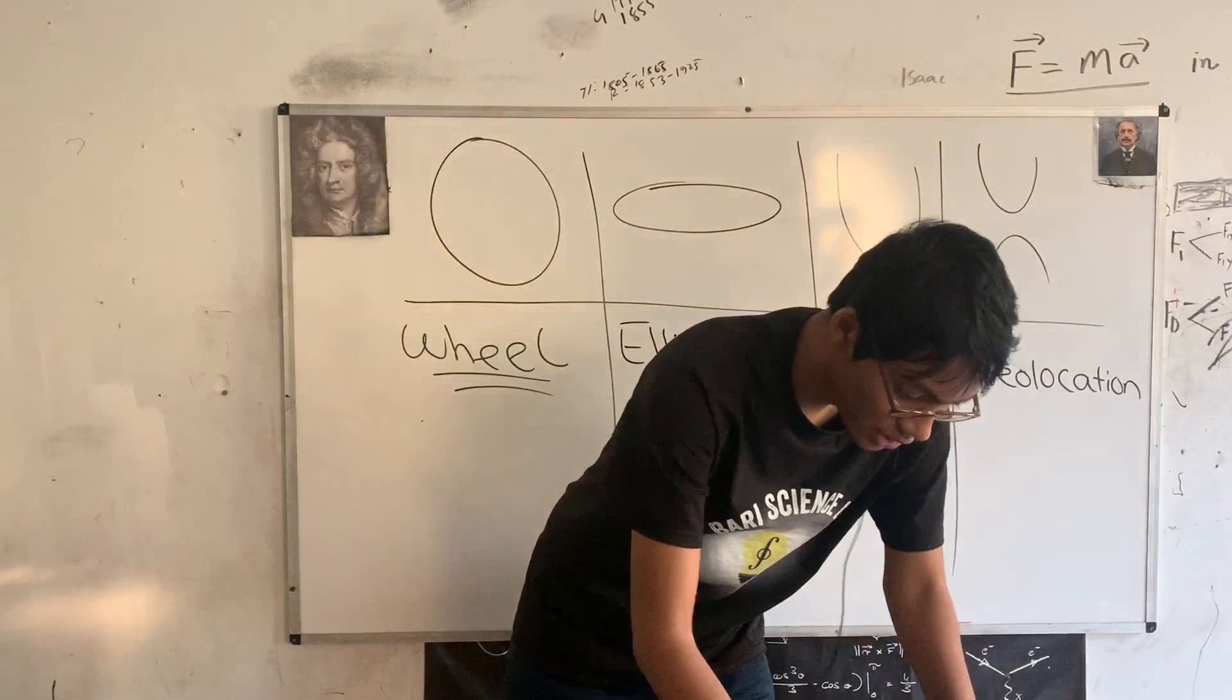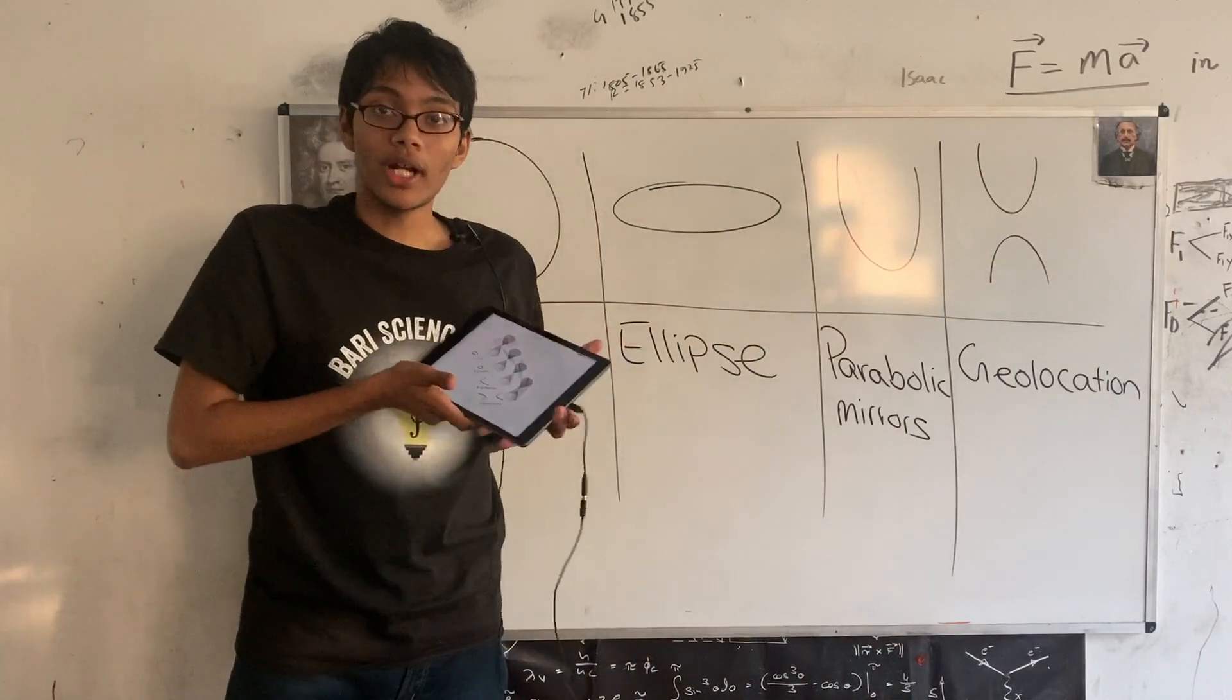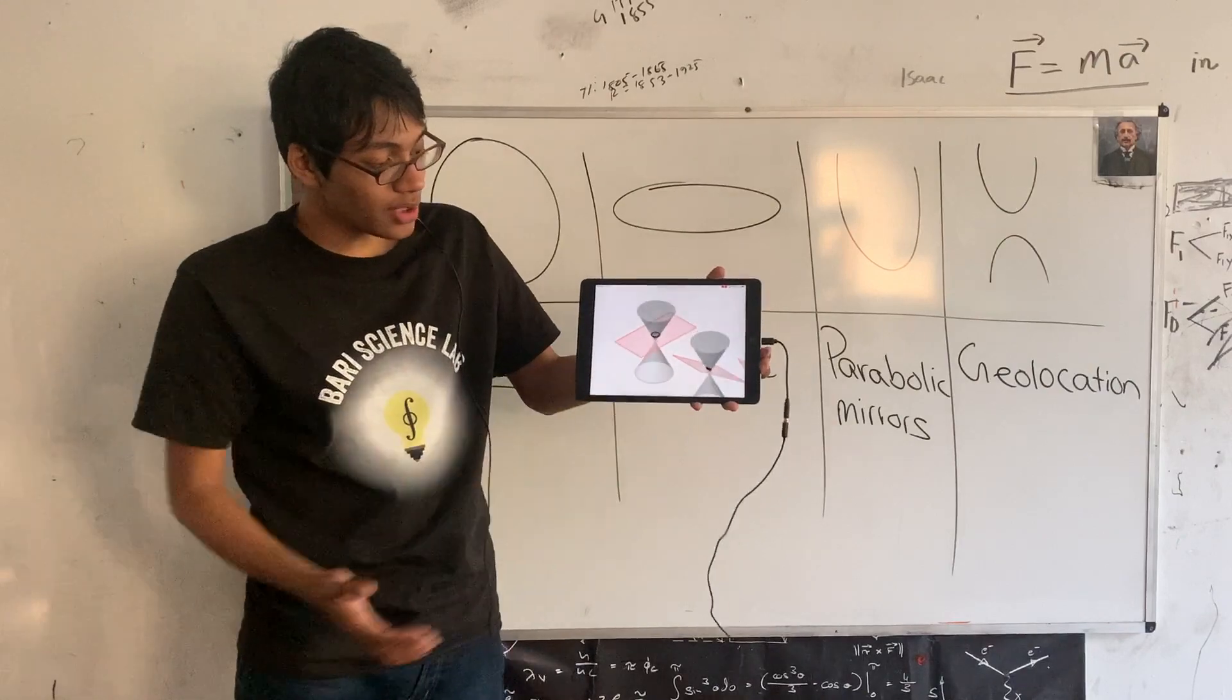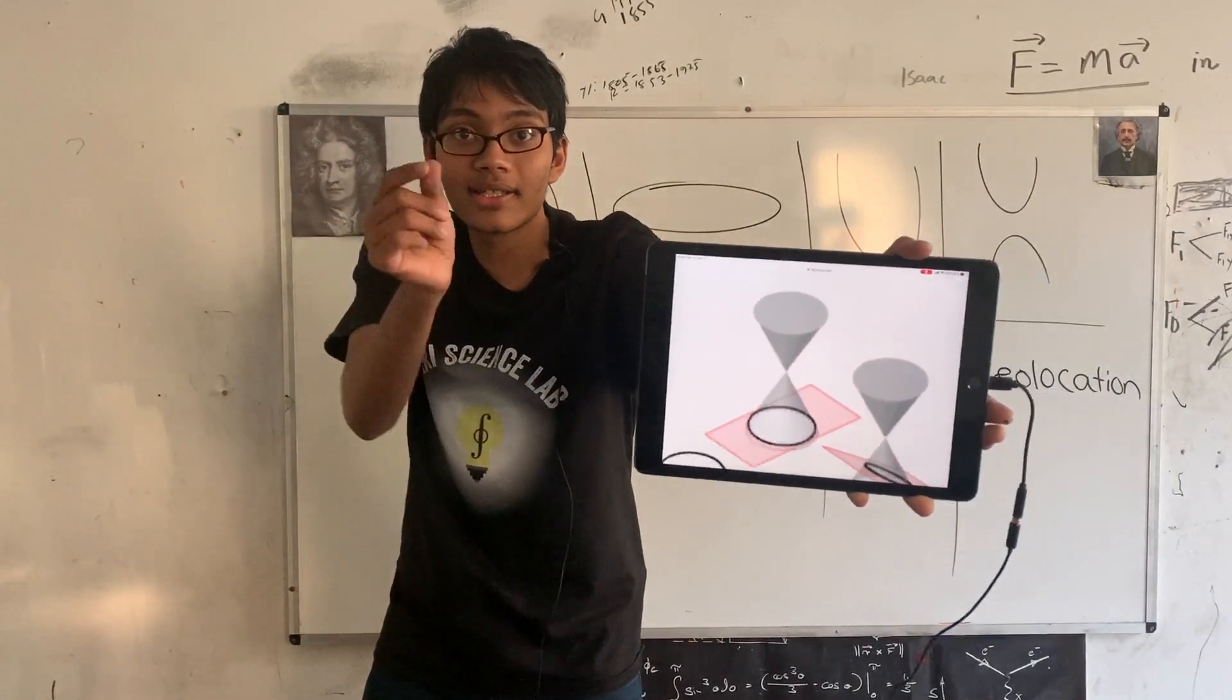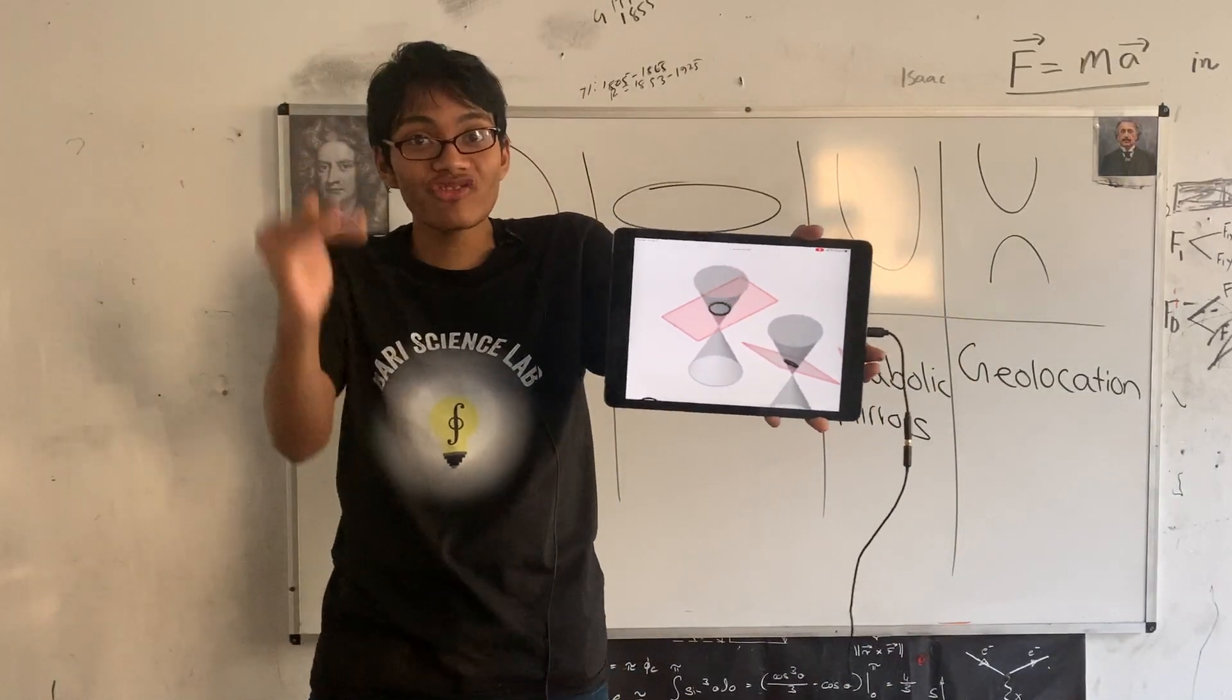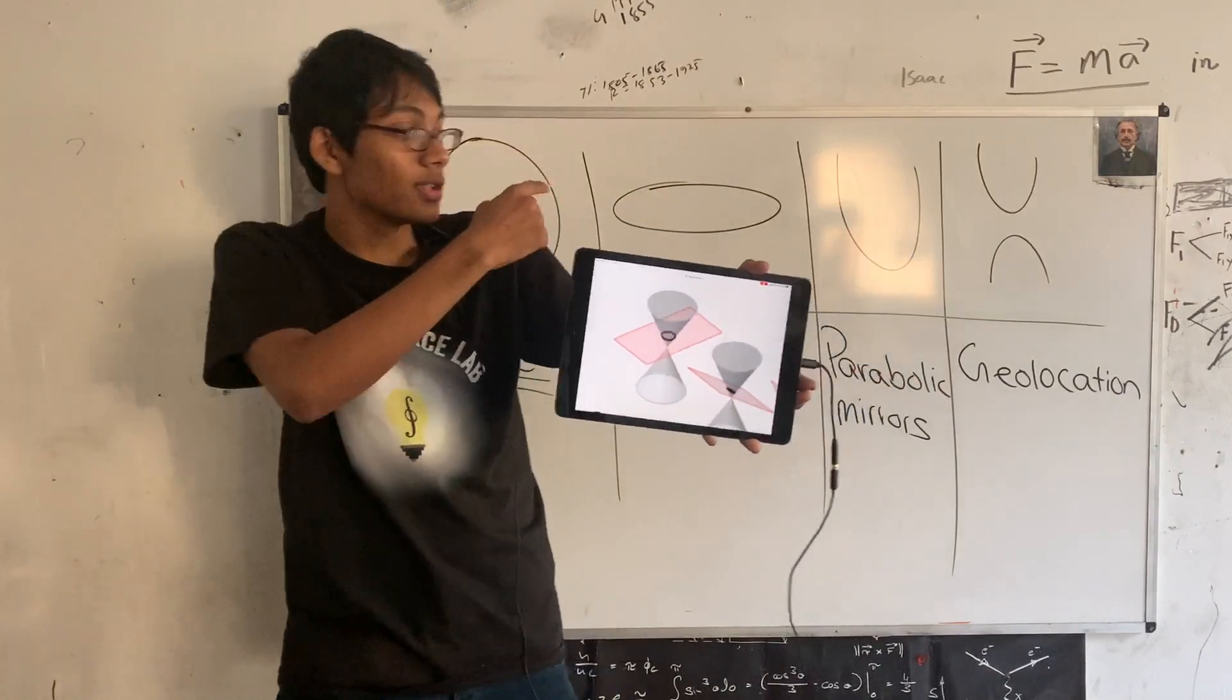But let me go ahead and just show you this. Check it out. So here we've got a double napped cone. Can you see one of these bad boys? You've got a double napped cone, which is two cones kind of intersecting each other, right? At the very pinpoint. And you can see how taking the cross section of those two cones can actually make all the conic sections, right?